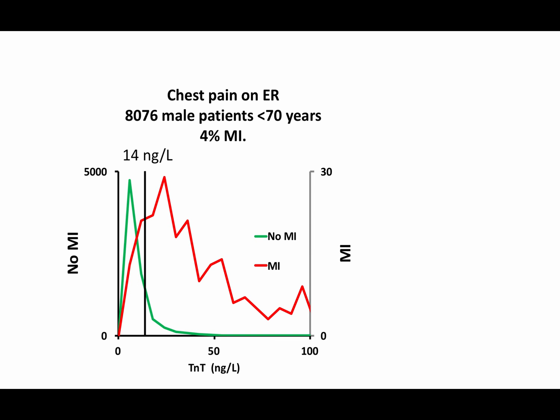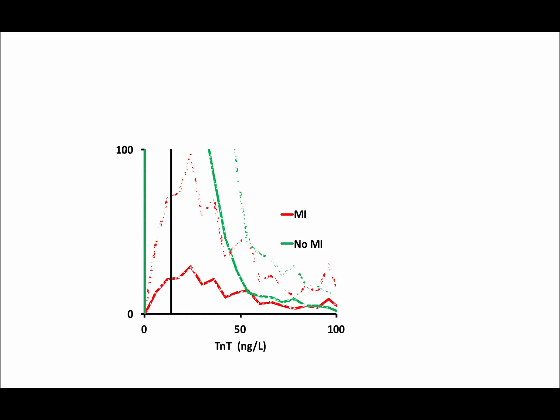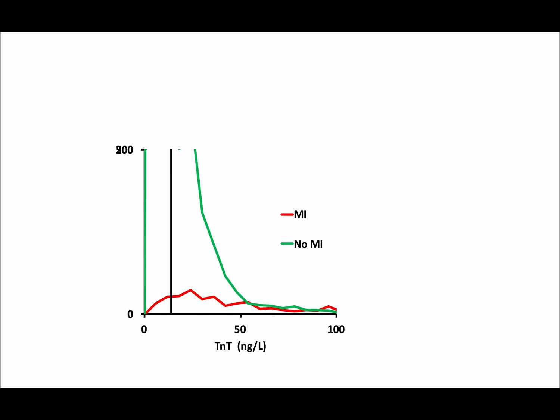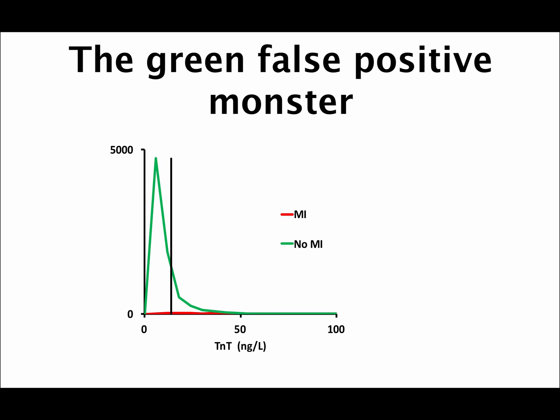The second statistical tool describes, at my patient's Troponin T-level, what is the risk of myocardial infarction. This is more complicated. Now we also need to involve the green chest pain patients without myocardial infarction in our calculations. I plot patients with and without myocardial infarction on a single y-axis. In order to see the green plot of patients without myocardial infarction, we need to adjust the y-axis. And as I do so, you see the rise of the green false positive monster that you need to take into account when you describe the risk of myocardial infarction in your patients.